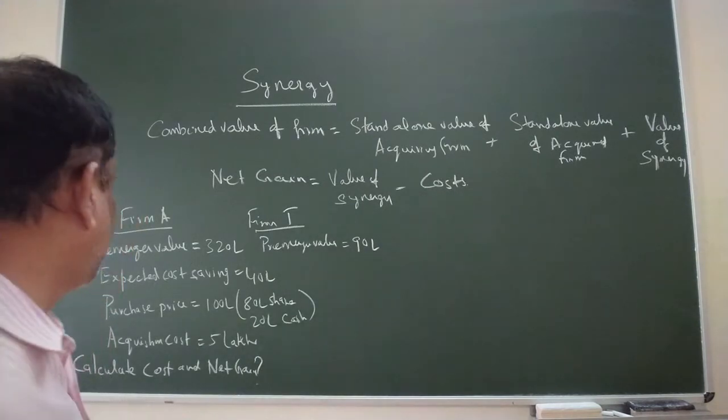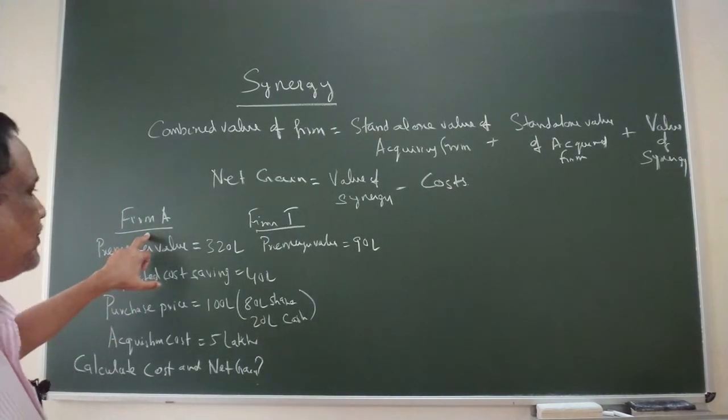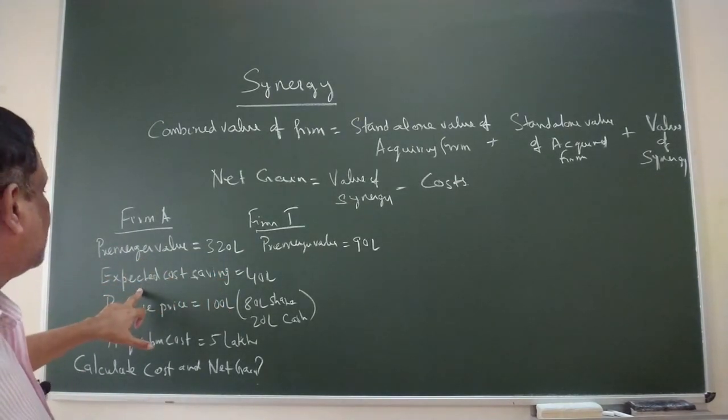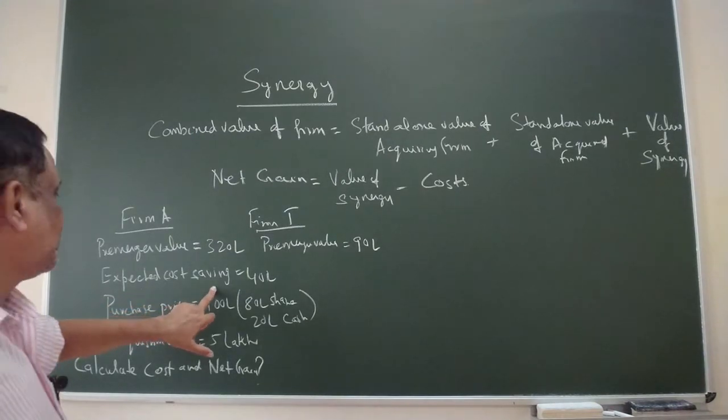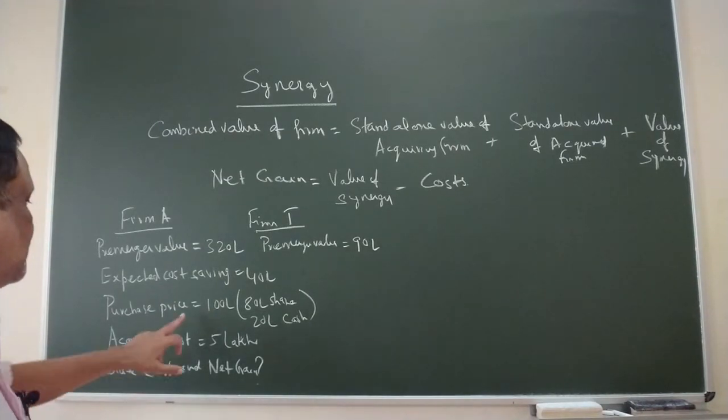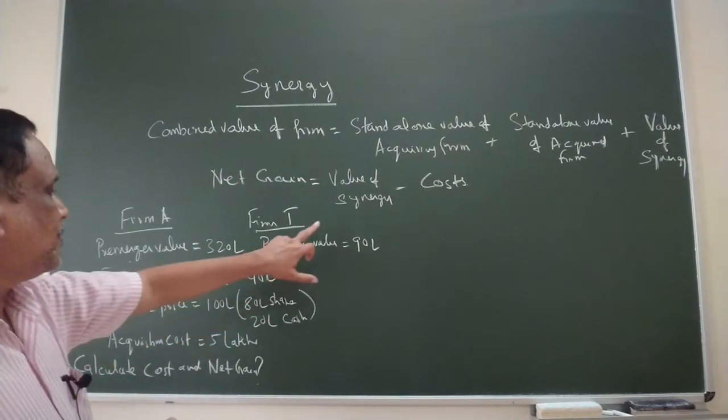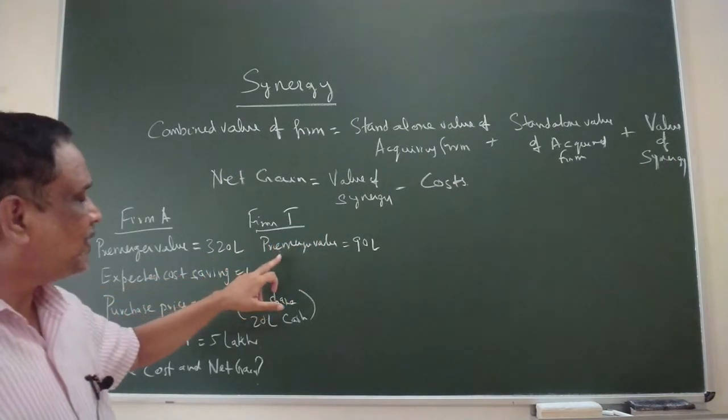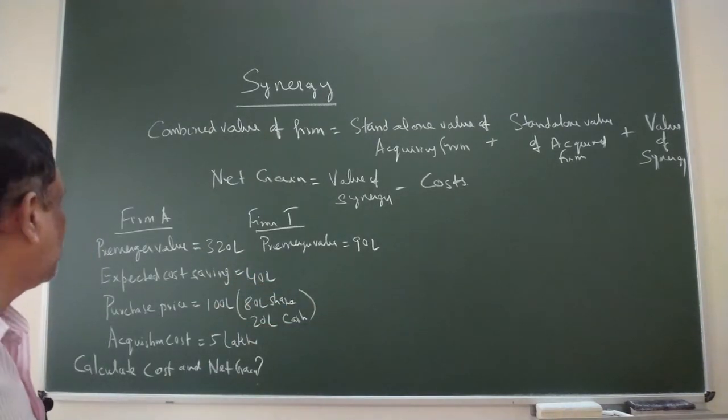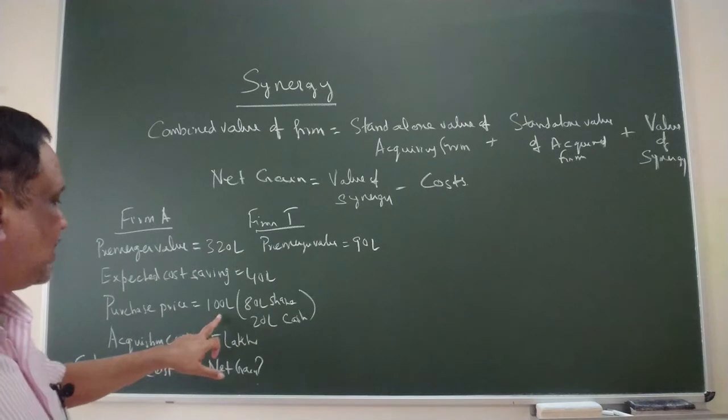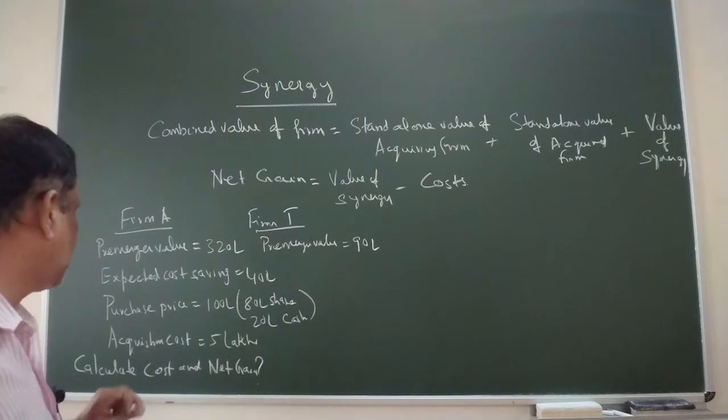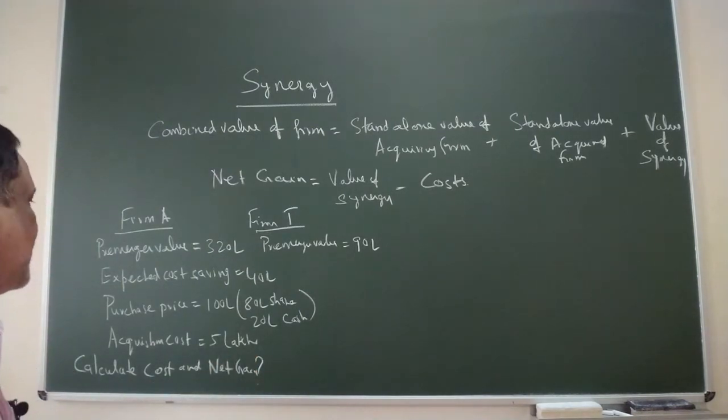We have a problem which is given in the slide. Firm A has a pre-merger value of 320 lakhs and expected cost of saving is 40 lakhs. Firm T is having a pre-merger value of 90 lakhs and purchase price which is to be paid by Firm A is 100 lakhs, which is 80 lakhs share and 20 lakhs cash. Acquisition cost is 2 lakhs. Calculate the cost and net gain.